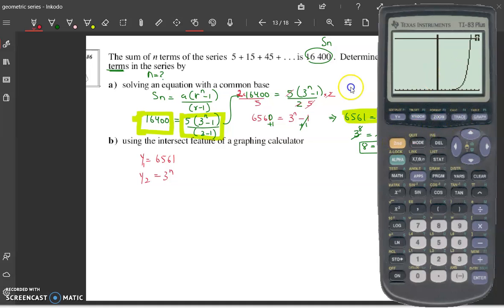So there we can see the intersection point. So then we go second trace, option number 5. Take your cursor close to the intersection point, which is a good habit when we'll have multiple intersection points, and enter three times. And it does give us that x is equal to 8.